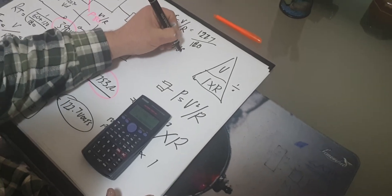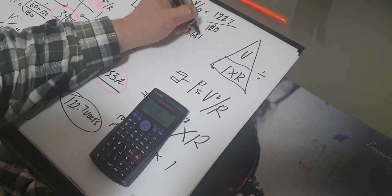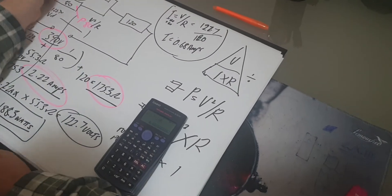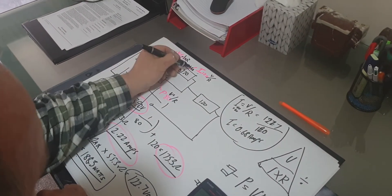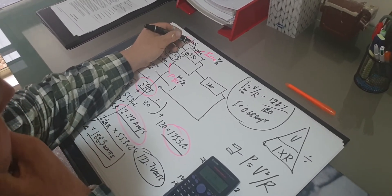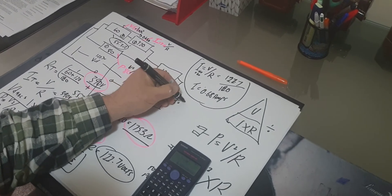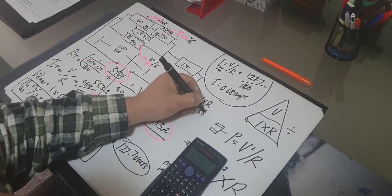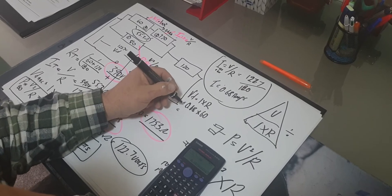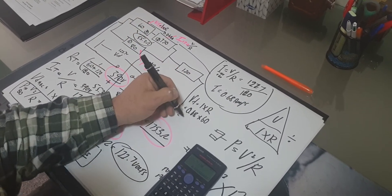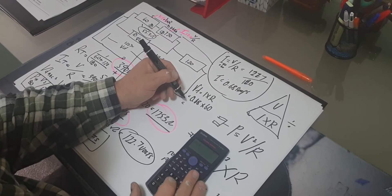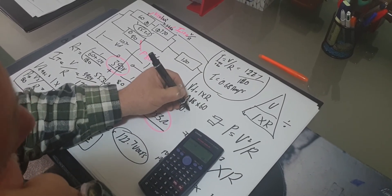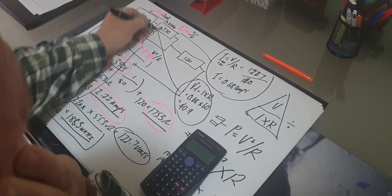So our current equals 0.681... sorry, 0.68 amps. So it's very low. So that is what I have running through here, 0.68 of an amp flowing through both of those. Now the voltage drop, I times R. Voltage drop equals I times R, so 0.68 times 60 equals 40.9 volts. So that is now giving me my voltage drop.